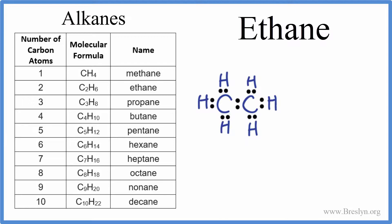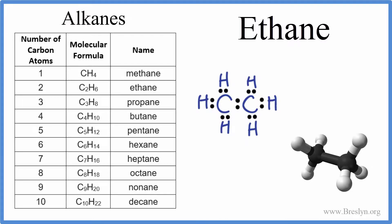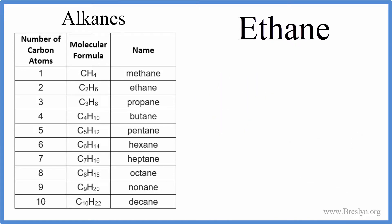We could also look at the molecular geometry — how they're arranged in three dimensions. We have our two carbons, those are the black atoms, with the white hydrogens spread out around them. With respect to each carbon, we have tetrahedral molecular geometry.